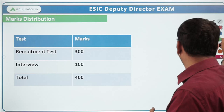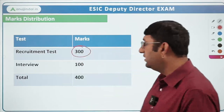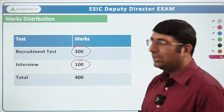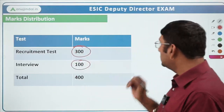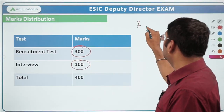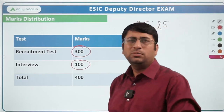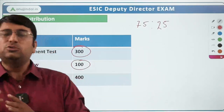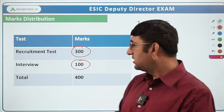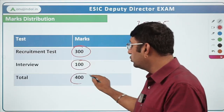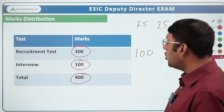The first question: what is going to be the marks distribution? The recruitment test is going to be for 300 marks and the interview for 100 marks. It has already been mentioned that the maximum marks for the recruitment test are 300, and the weightage of your recruitment test and interview is going to be in the ratio of 75:25, or 3:1.